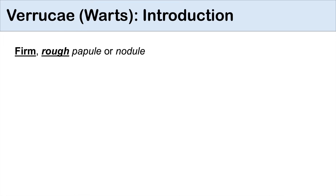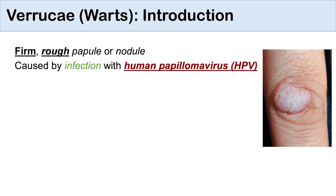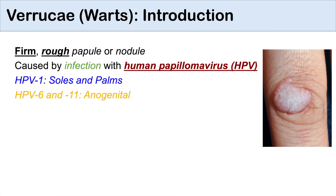Warts are firm rough papules or nodules — firm rough skin lesions — and they're caused by an infection with human papillomavirus, or HPV. There are about 150 different subtypes of HPV. The ones I want to highlight here are mostly HPV1, which infects the soles and the palms. HPV6 and 11 are common with anal-genital warts, and different HPV viruses have a predilection for affecting different parts of the body.